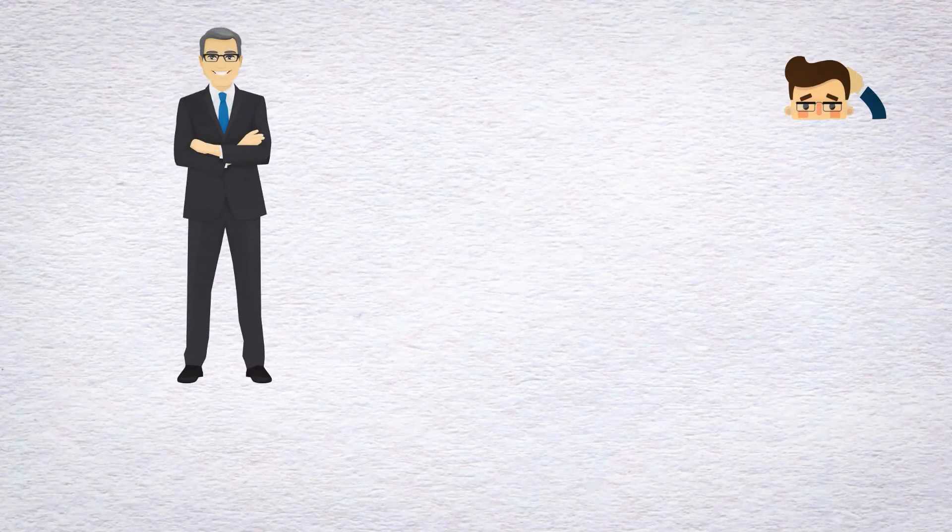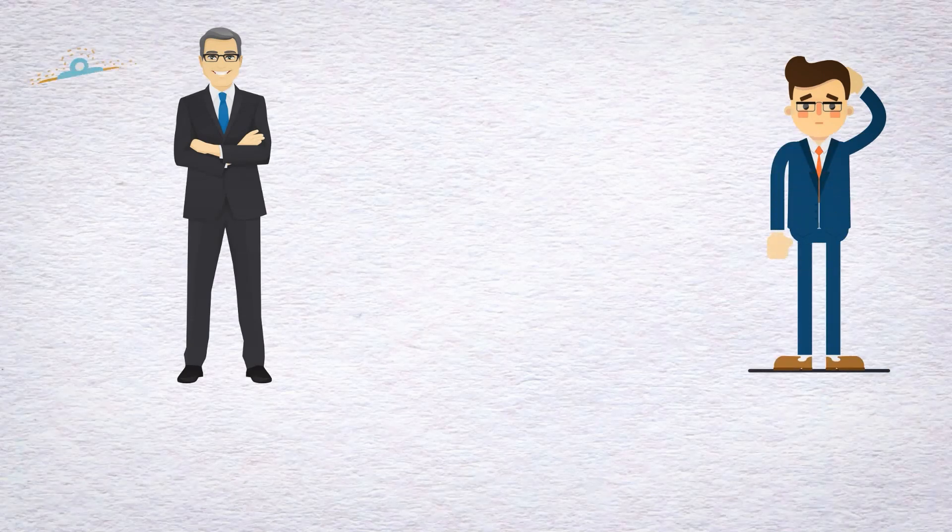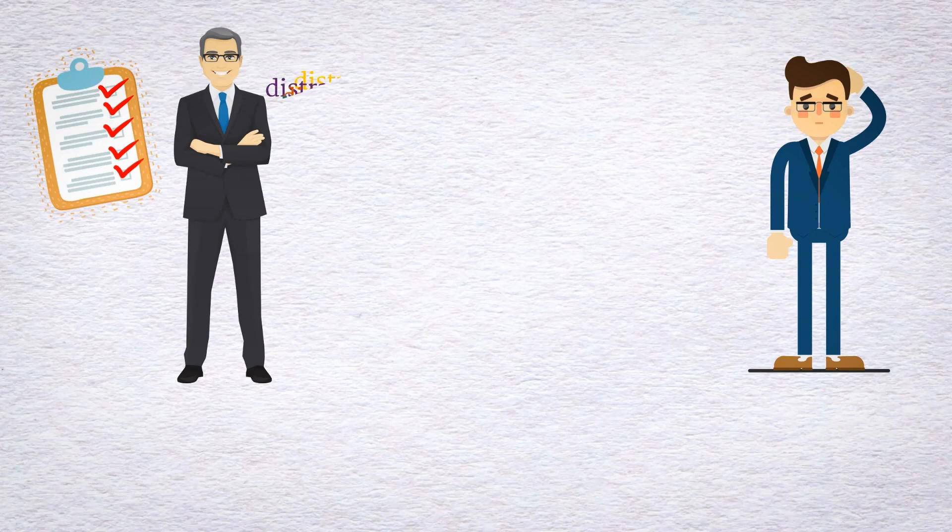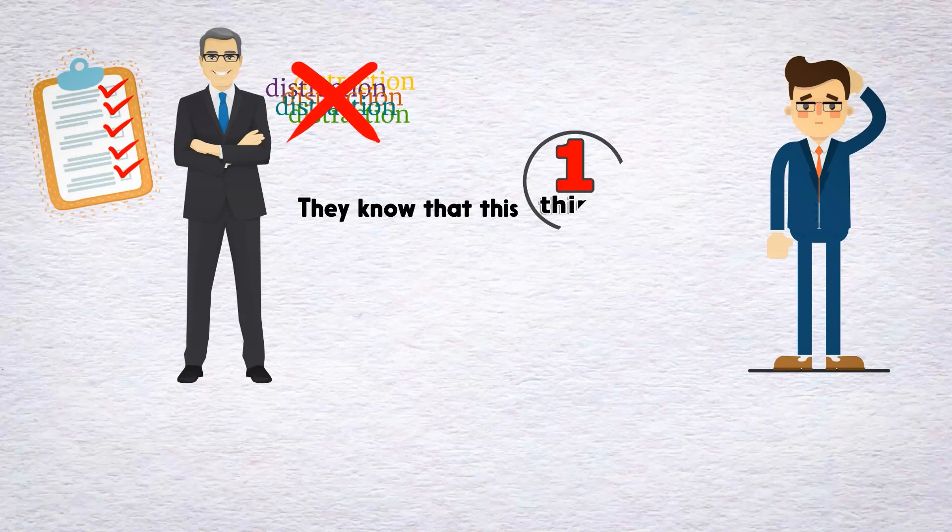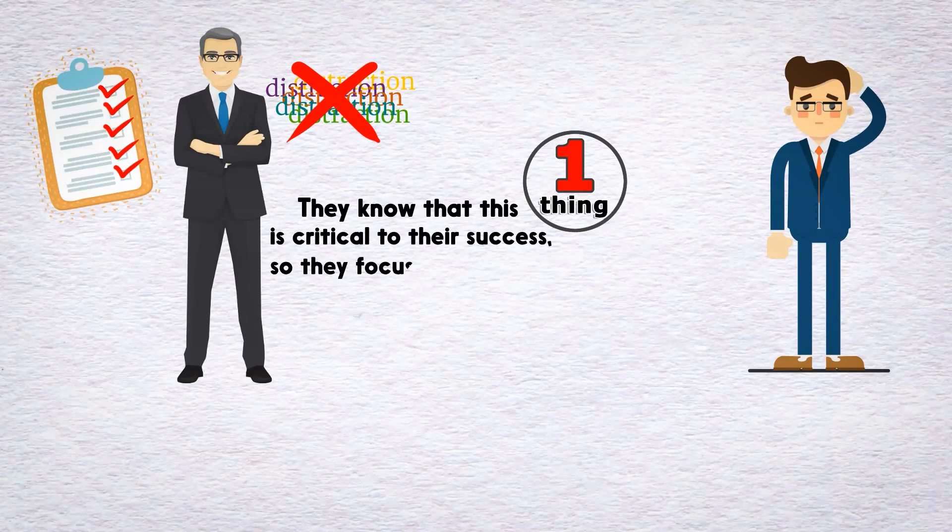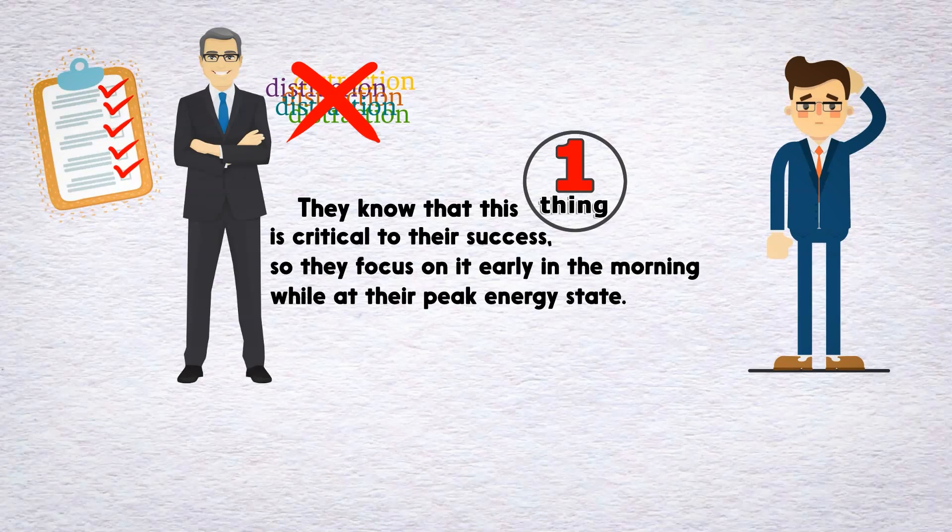Do you know what separates successful people from the not-so-successful people? It's simple. Successful people frequently prioritize their most important task and ignore everything else. They know that this one thing is critical to their success, so they focus on it early in the morning while at their peak energy state.